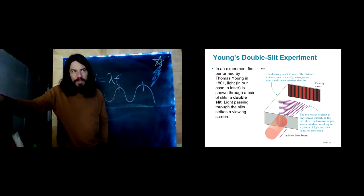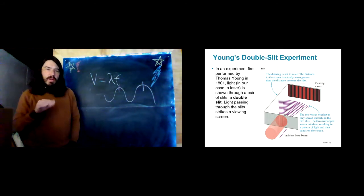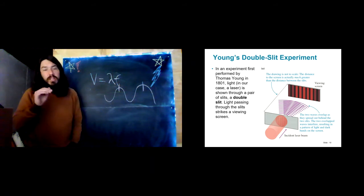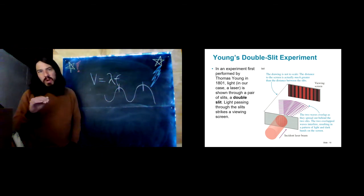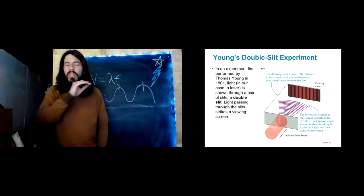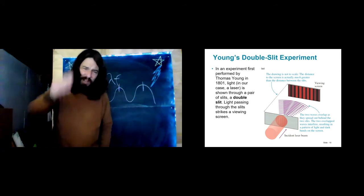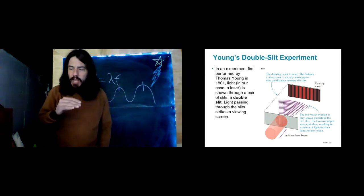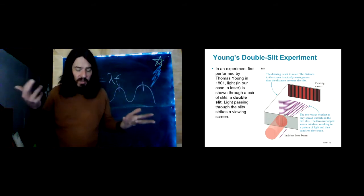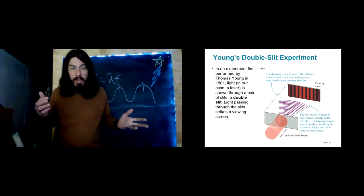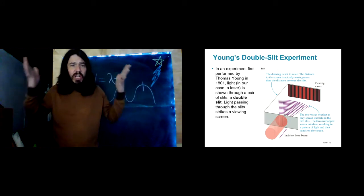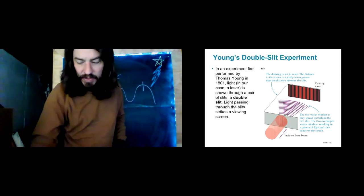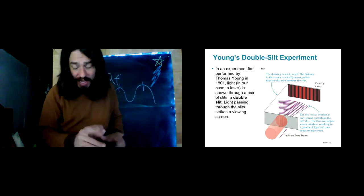One of the most famous experiments in all of modern physics is Young's double slit experiment. This is an experiment performed in 1801 by Thomas Young that confirmed without a doubt that light is definitely a wave. There's no way to explain this experiment except by knowing that light is a wave — that's the only way to explain it. If you see diffraction, you just saw a wave. Young's double slit experiment is the classic experiment that proves light is a wave.